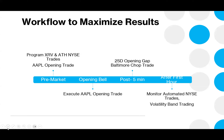In order for us to be successful, we take a certain group of trades and pre-program them. I call them XRVs and the 'Around the Horn' NYSE trades. I differentiate between NYSE and NASDAQ in my trading — they're different animals. They always have been, always will be.